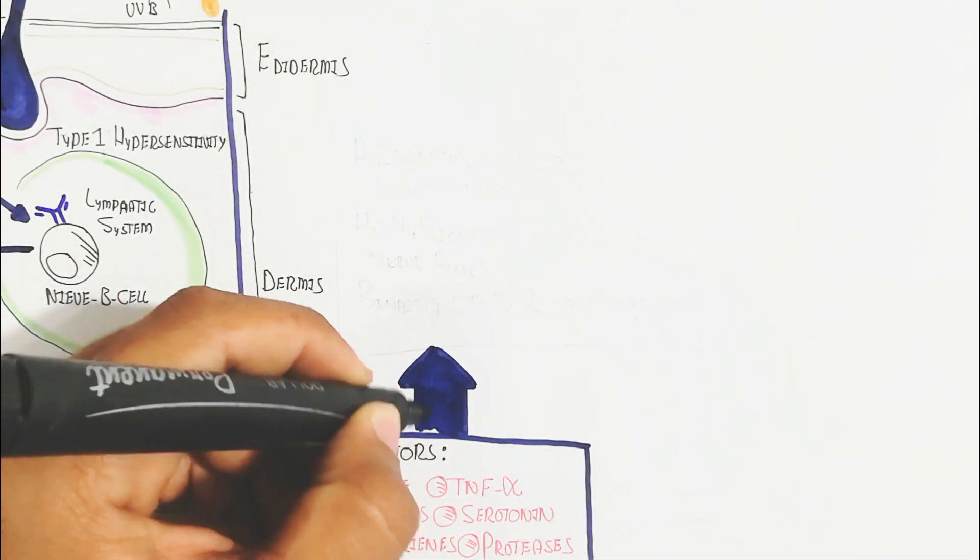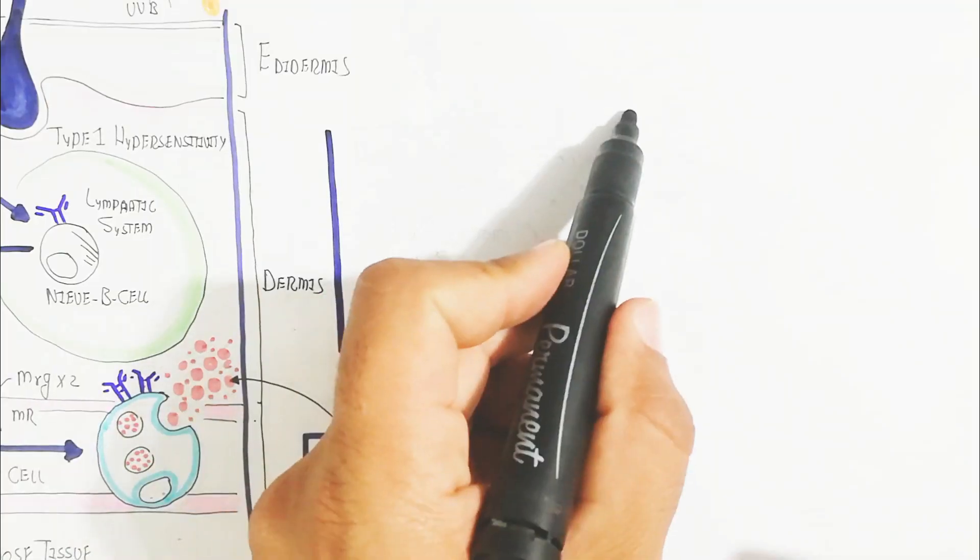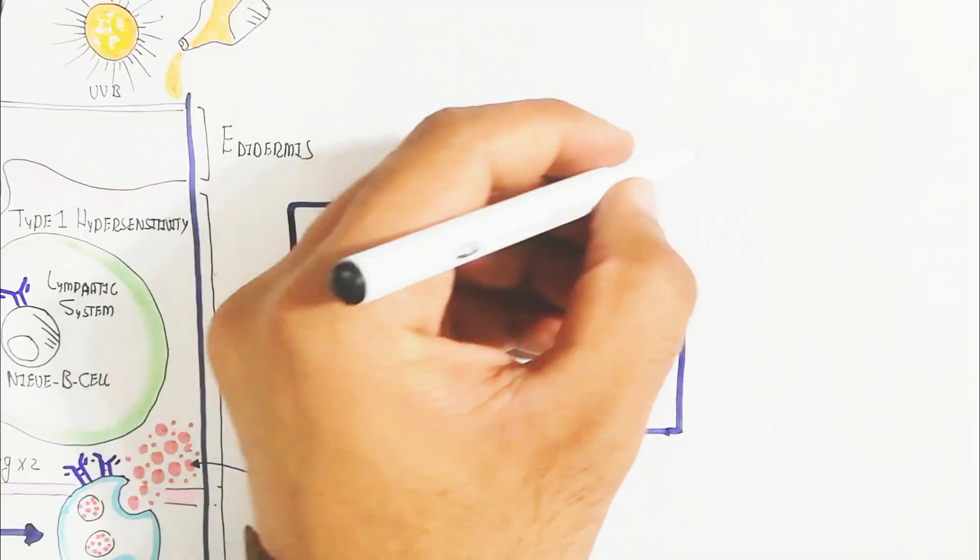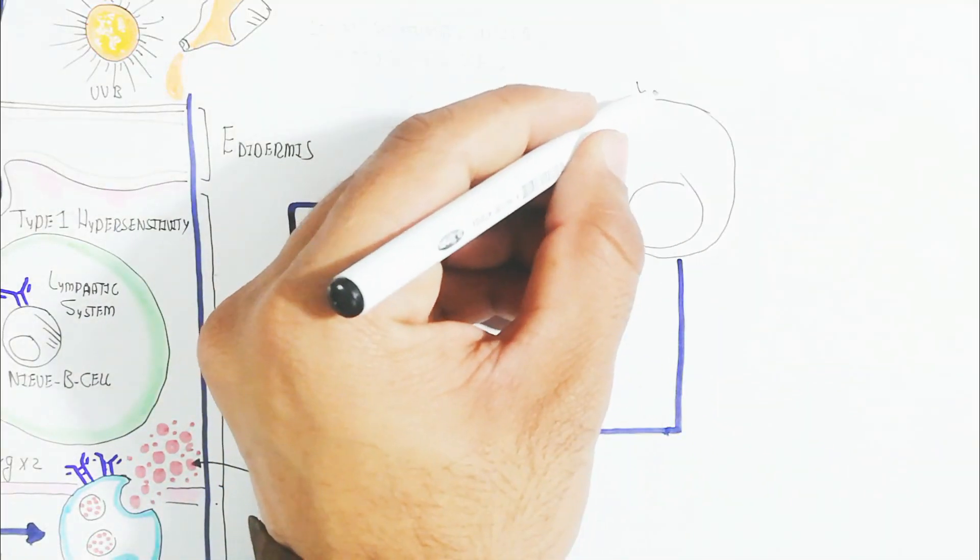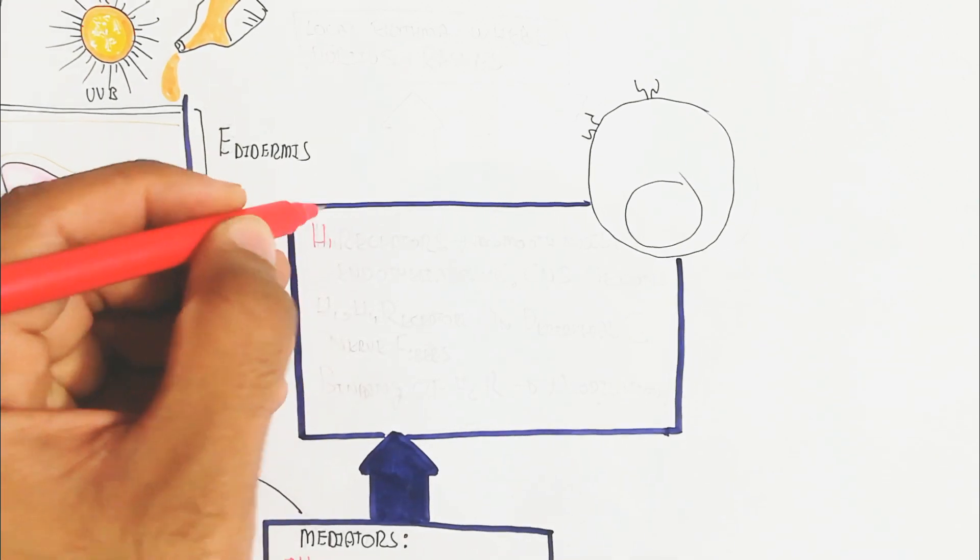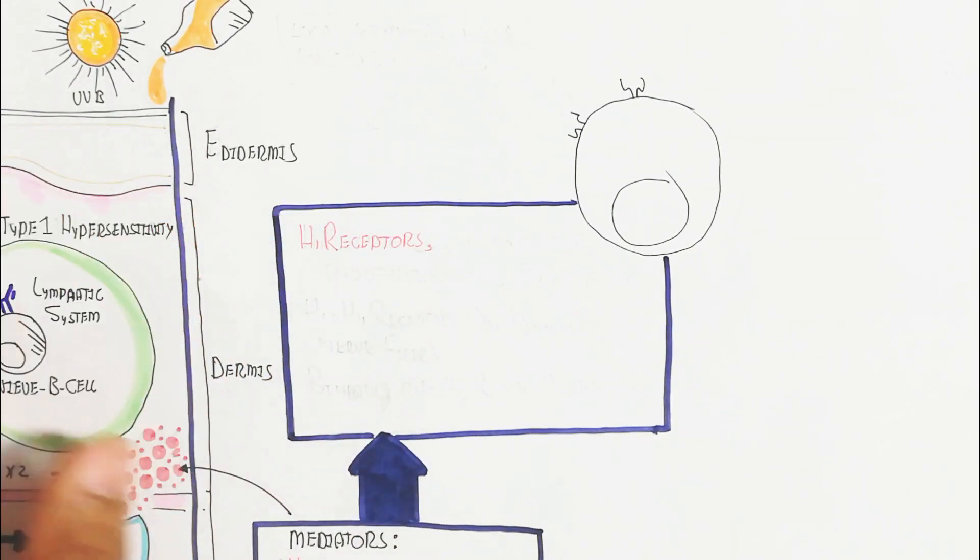In this way, the mediators will interact and bind with the H1 receptor. When it binds with the H1 receptor, the smooth muscle endothelial cells and the central nervous system neurons will lead to changes in physiology like vasoconstriction.